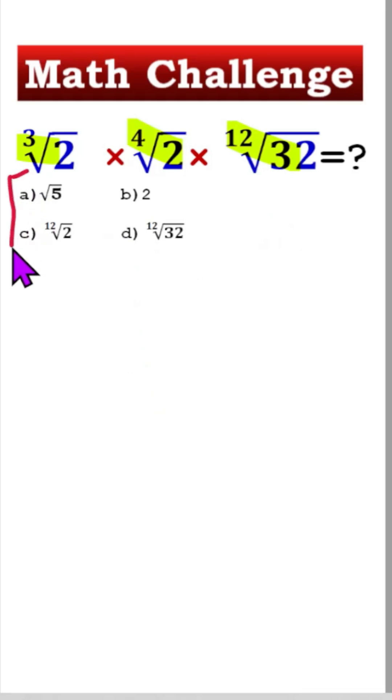First, for cubic root of 2 we can write 2 to the power 1 divided by 3. Times this one, we can write 2 to the power 1 by 4. Times this one, we can write this is 32.